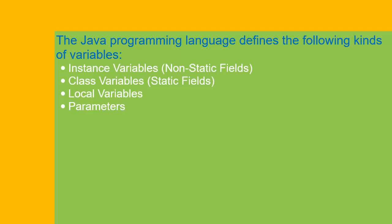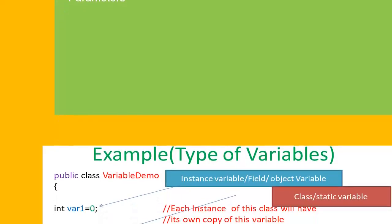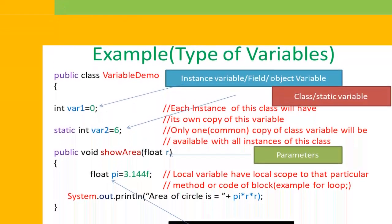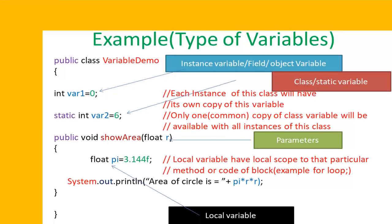First are instance variables or non-static fields. Second are class variables or static fields. Third are local variables, and fourth are the parameters. Now we can understand them one by one. For example, we have a class which is named as VariableDemo. In this class we can discuss all four types of variables which are available in Java.